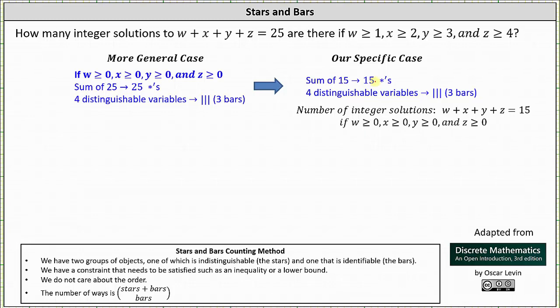So the number of integer solutions to the given equation with the given restrictions on the variables is going to be the number of strings of length 18 with 15 stars and three bars, which is 18 choose three. So this would be one approach to determine the number of integer solutions to the given equation with the given conditions for the variables.